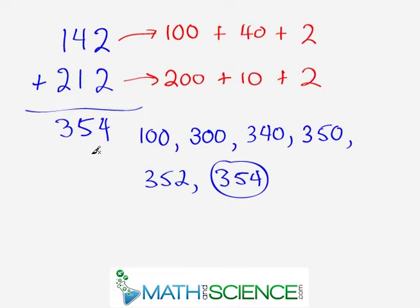You don't want to use the word plus in your head. You don't want to slow your brain down saying 100 plus 200 is 300. You want to keep track of the new total. So if we were going to do this without writing anything down it would be like this: 100, 300, 340, 350, 352, 354. 354 is our answer.